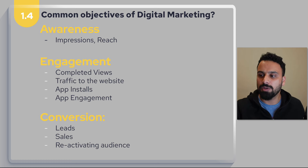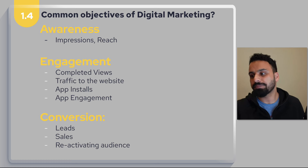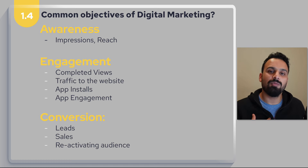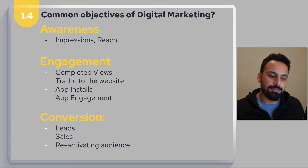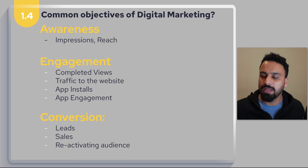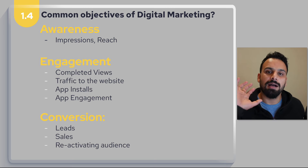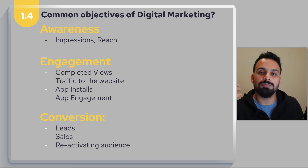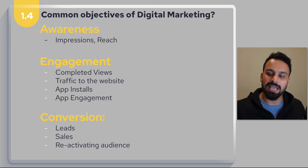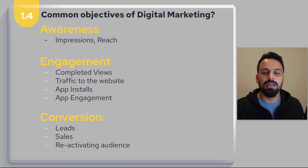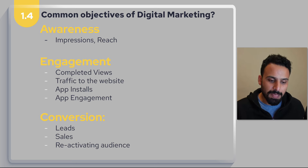App engagement is another objective. For example, Uber might build an audience of users who installed their app but haven't ordered or booked a taxi in the last 30–60 days. They'd run re-engagement campaigns to get those existing users to start using the app again. This also falls within engagement metrics in some cases.